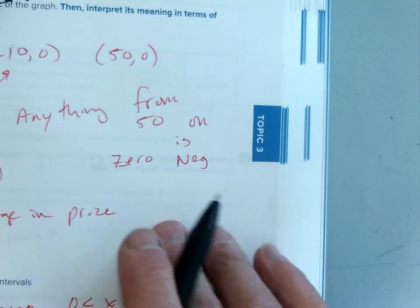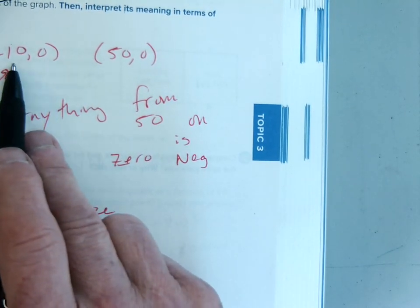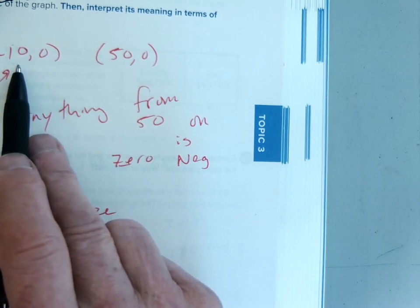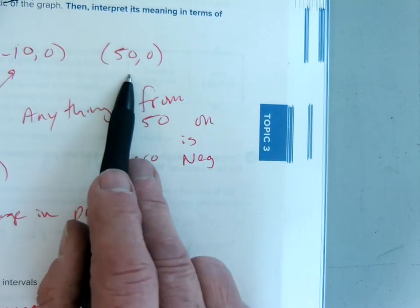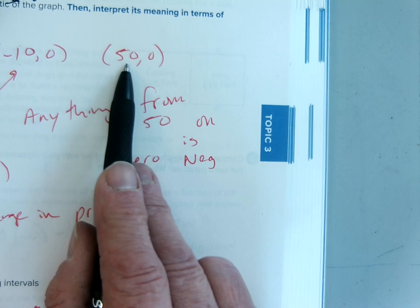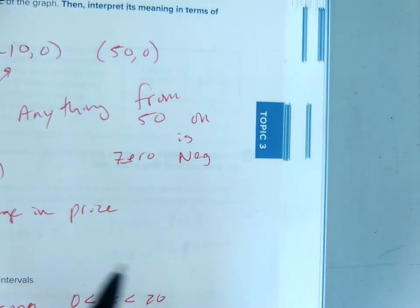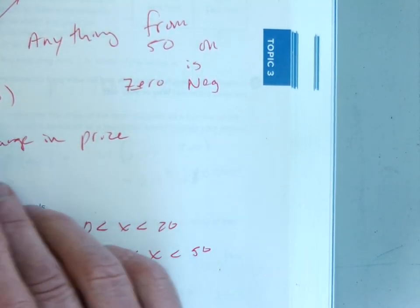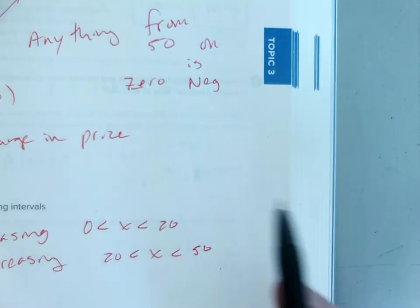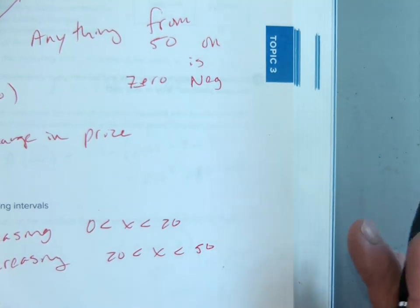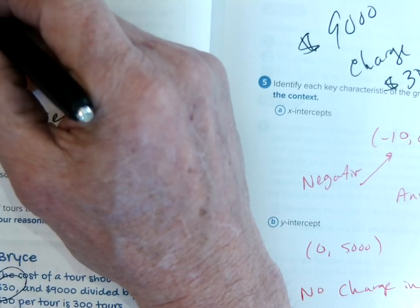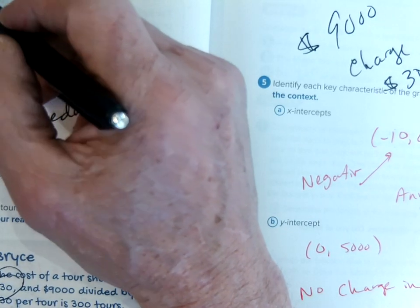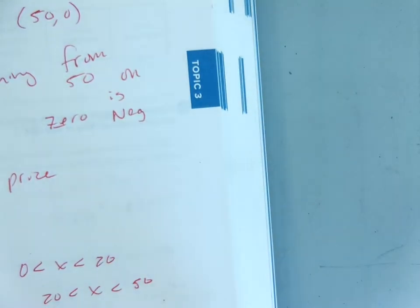Key concepts: the X-intercepts are at negative 10 and 50. Negative 10 doesn't make sense because you're not going to have a negative discount, and $50 discount isn't good either because that means basically you're not going to make any money — zero income. The Y-intercept is $5,000, because that's where they started — their original income before they change any price. The function is increasing up to X = 20, and then once they discount more than $20, they end up losing money, so it decreases from X = 20 to X = 50.